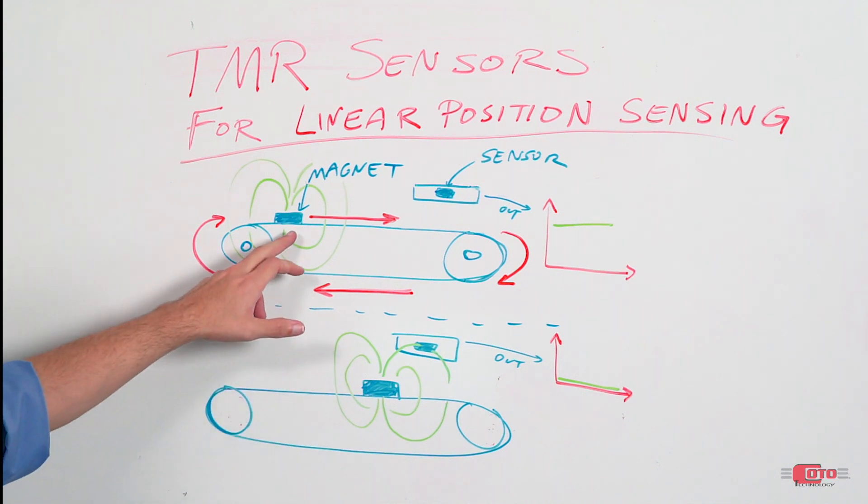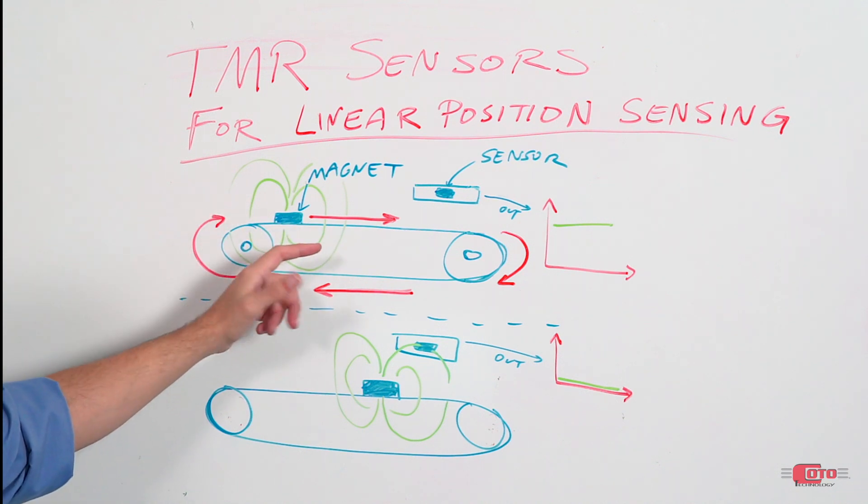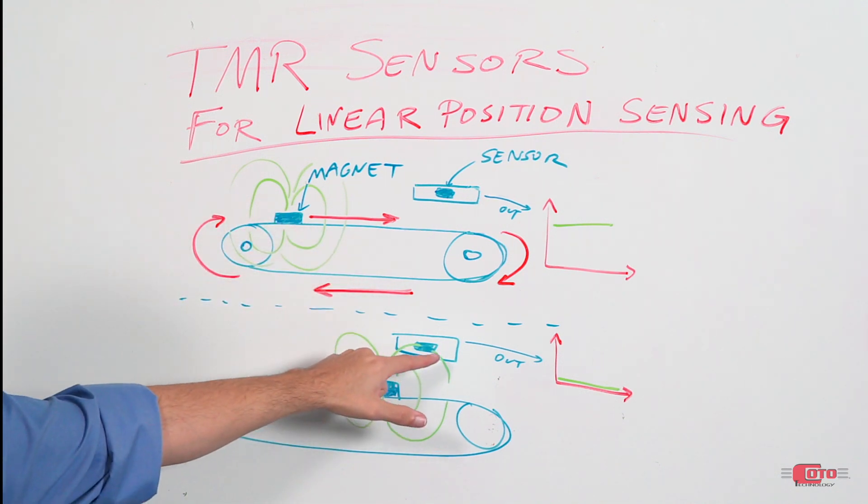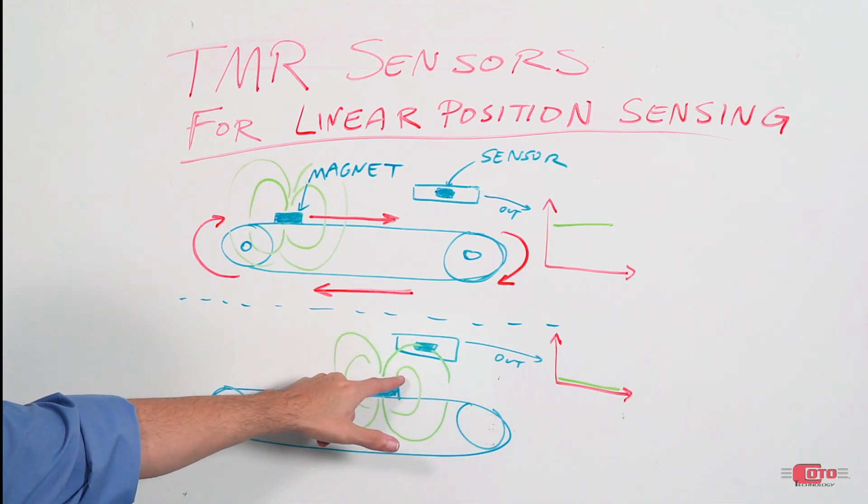We will have a magnet that is mounted on top of a conveyor belt, and this conveyor belt is being driven by a motor. Once the magnet gets close to the TMR sensor, which is placed directly above this conveyor belt,